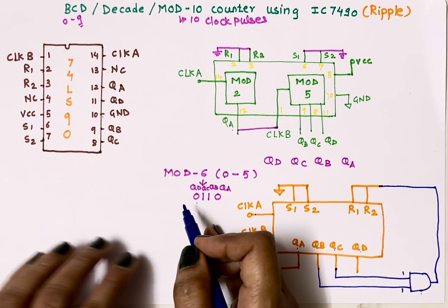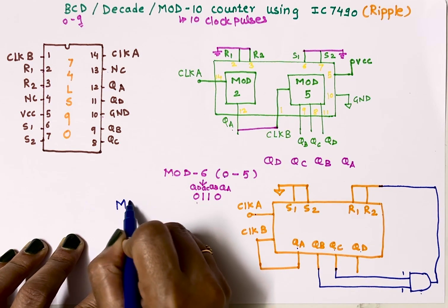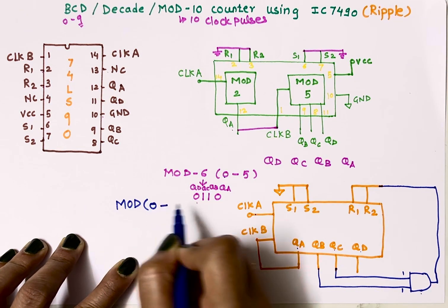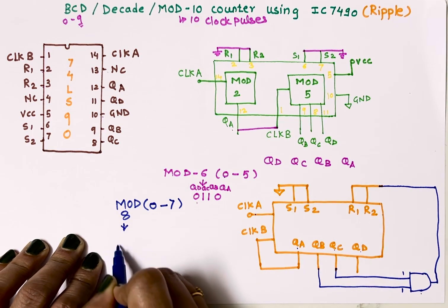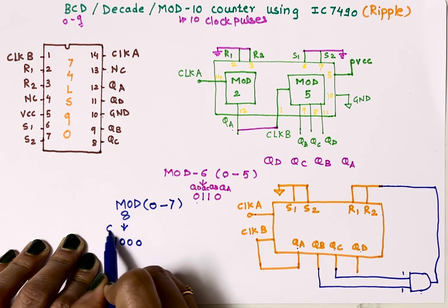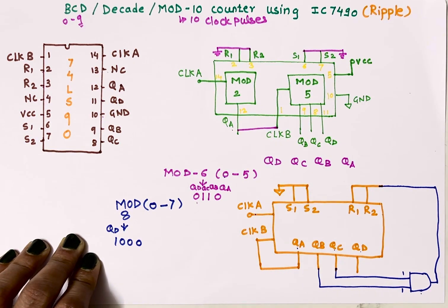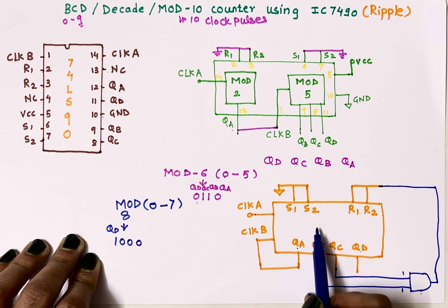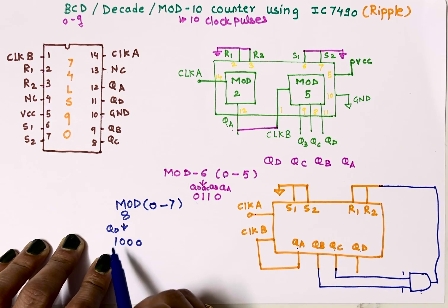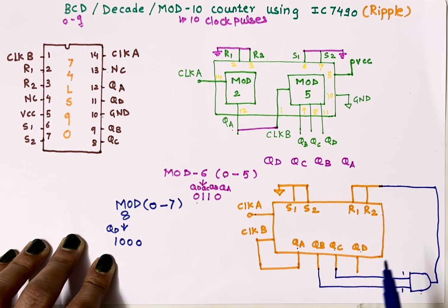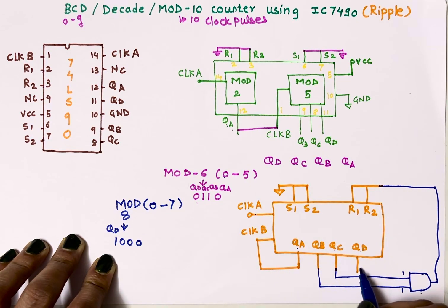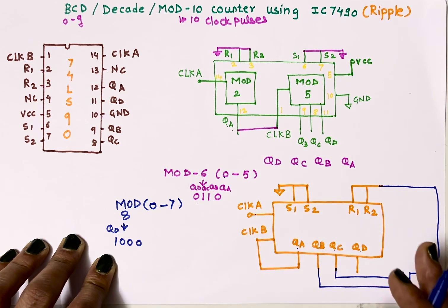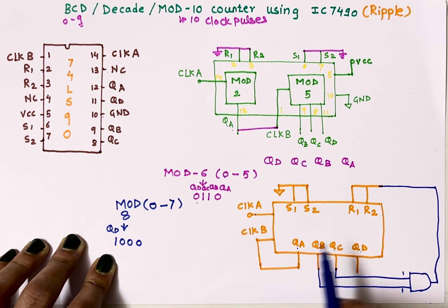To implement mod-8 counter, mod-8 means 0 to 7. Binary equivalent of 8 is 1000. Here you can see only QD is 1. So to implement mod-8 counter using 7490, I will simply connect QD - I choose outputs which are 1 - so I will choose QD and connect that QD to reset pins. As soon as QD becomes 1, my counter will reset and will start counting from 0, so it will count from 0 to 7 only.